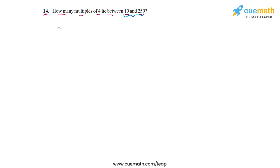So what we're going to do is first find the smallest multiple of 4 that lies between 10 and 250. So we're going to find that multiple of 4 which comes immediately after 10. That number is 12.